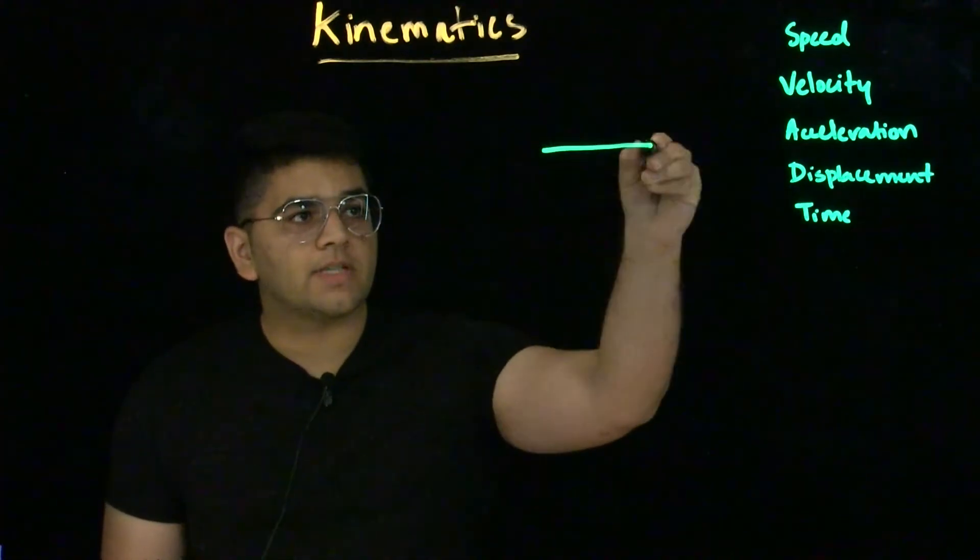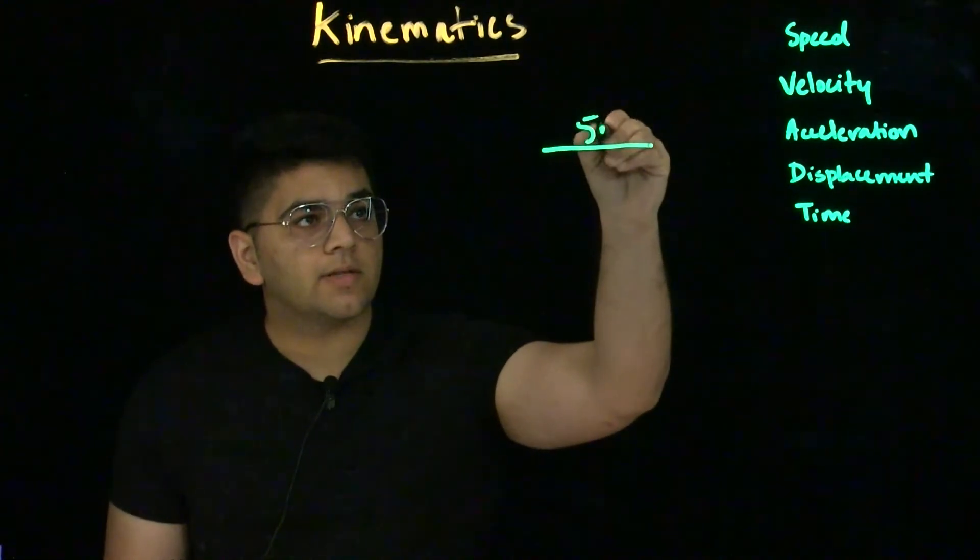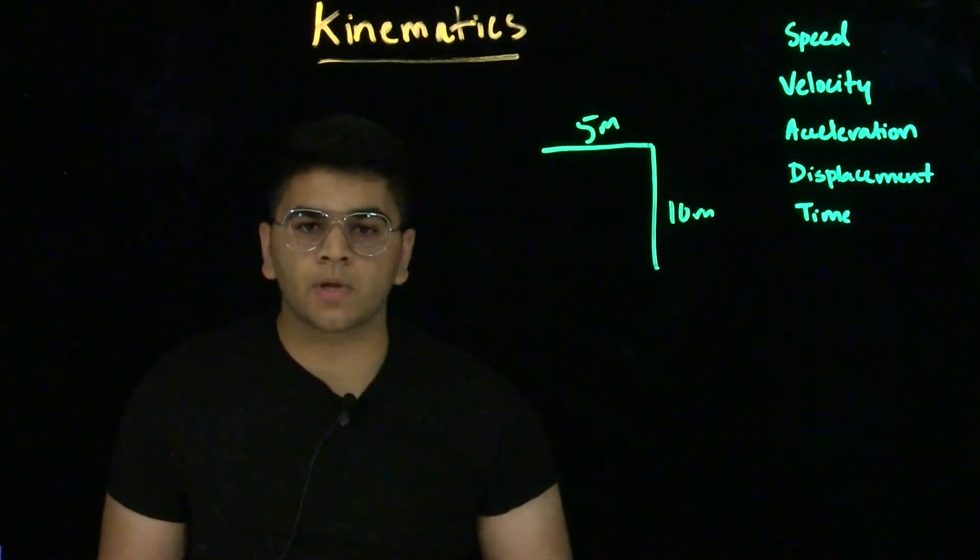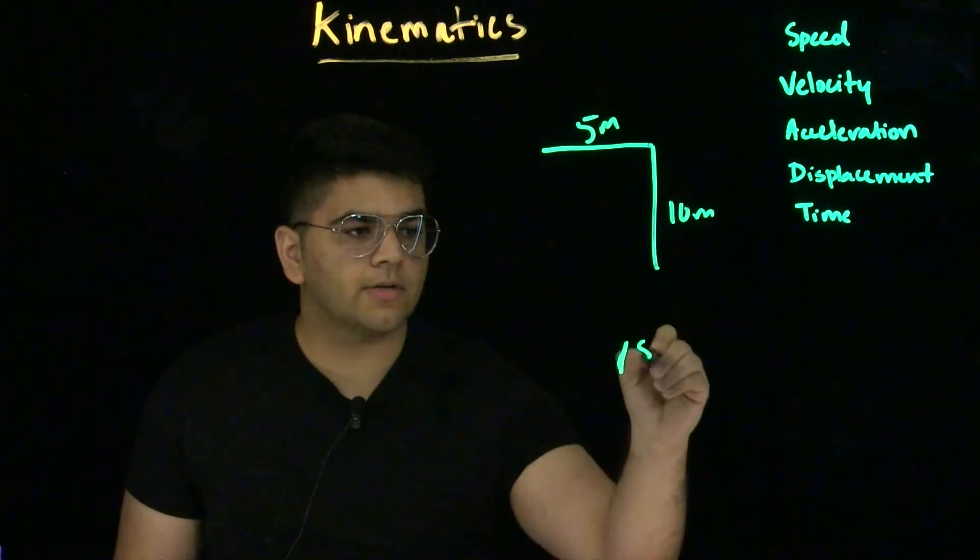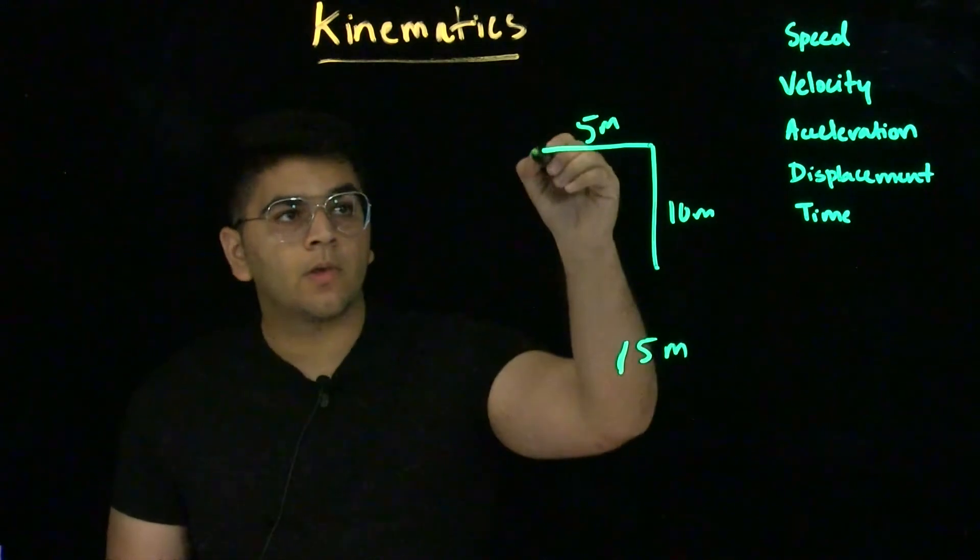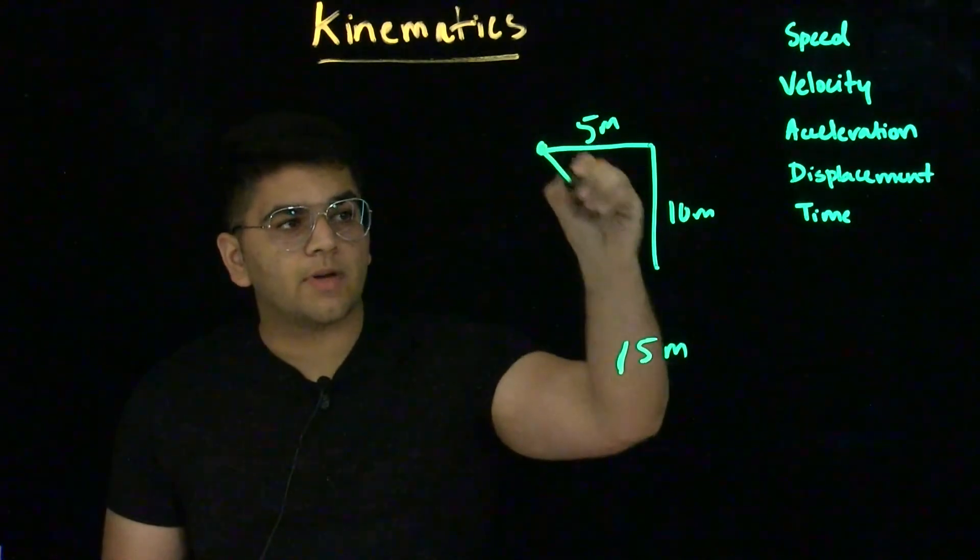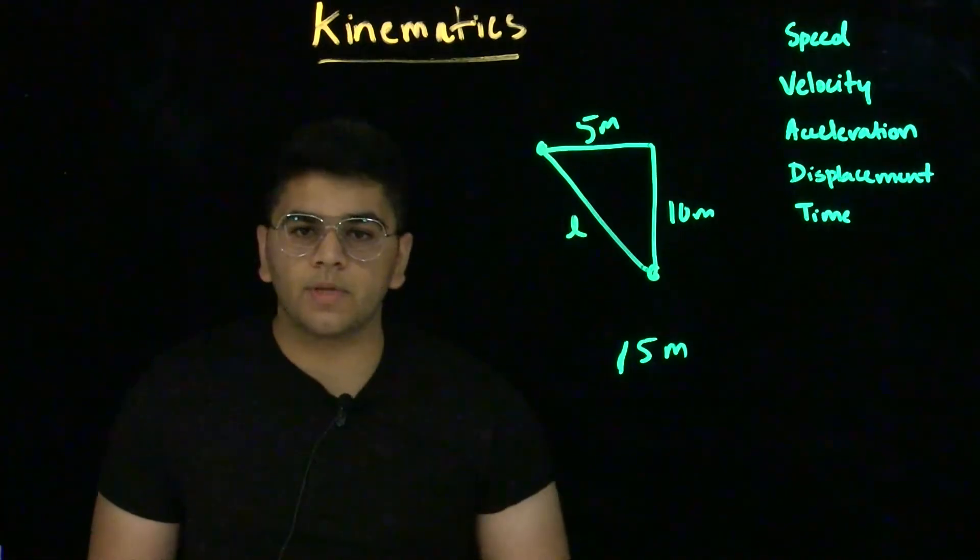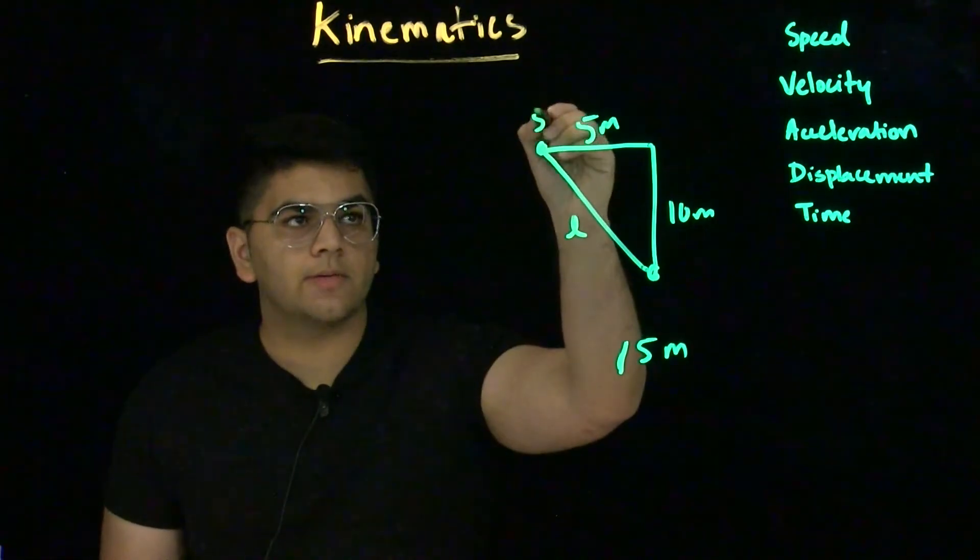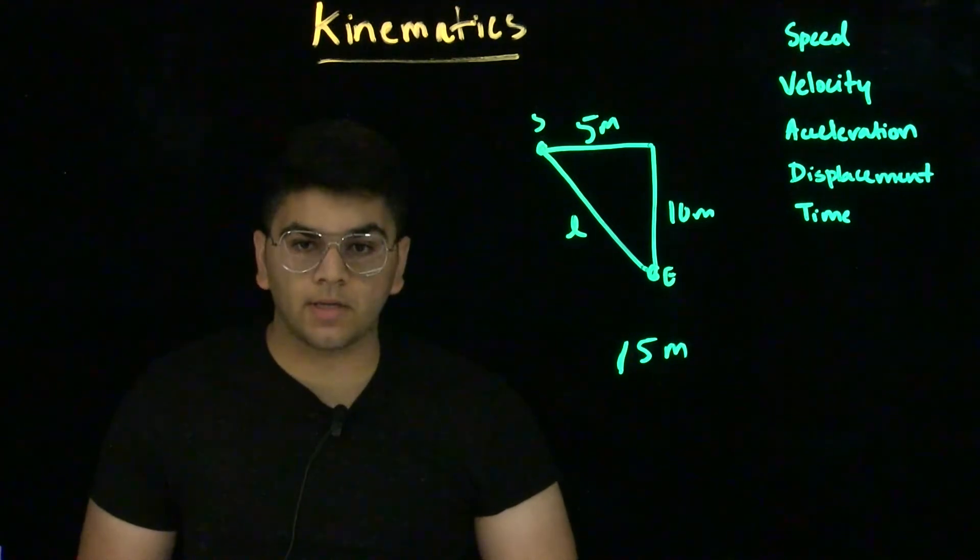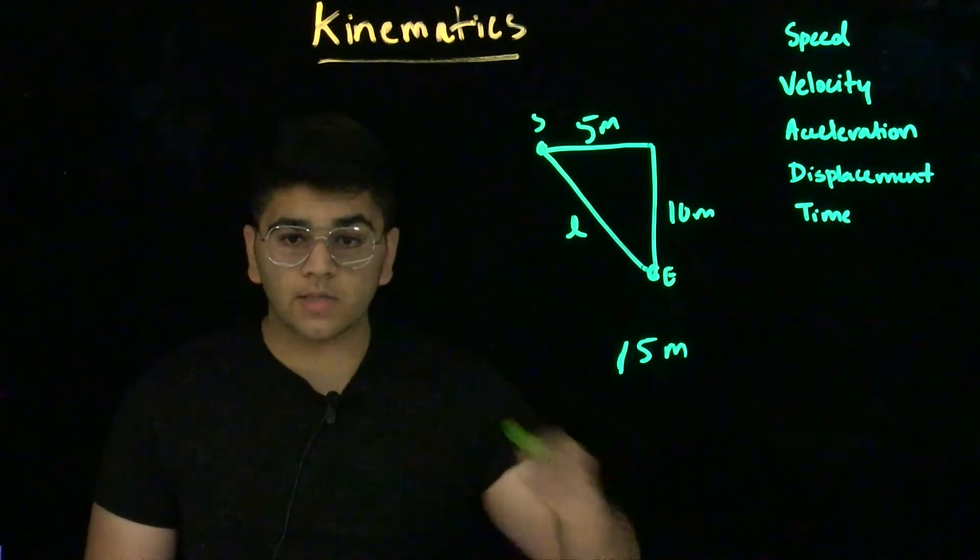If a car, for example, travels 5 meters in this direction and then 10 meters in this direction, the distance traveled will be 15 meters. But displacement does not work in the same way. Displacement of the object, of the car, will be the distance from its starting point to its end point. And this is how we find the velocity for the moving car in this particular motion.